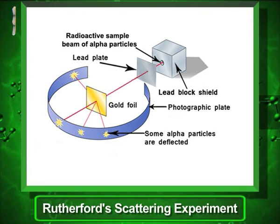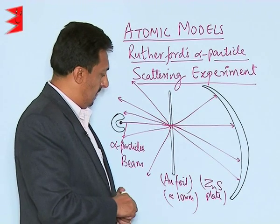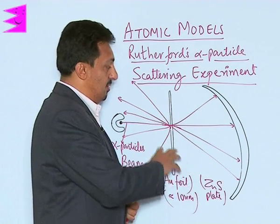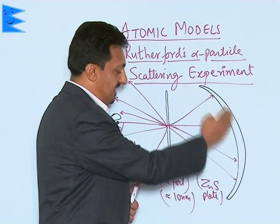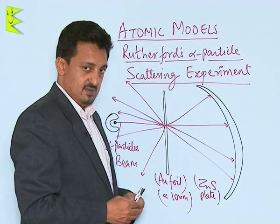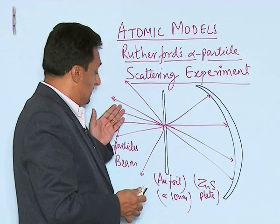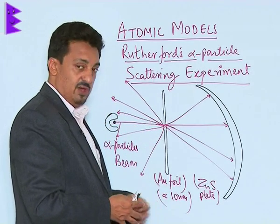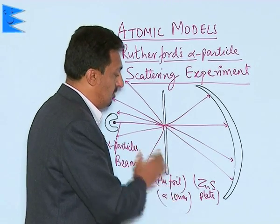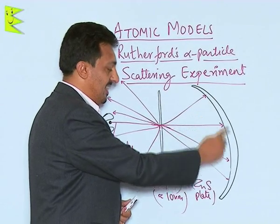The gold foil was taken to a thickness of around 10 nanometers, which is very small. He placed a fluorescent zinc sulfide plate on the other side acting as a screen. As alpha particles were allowed to pass through the thin gold foil, most of them passed through without any deflection, and their marks were observed on the zinc sulfide plate.